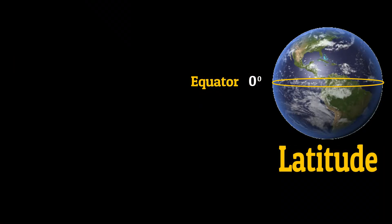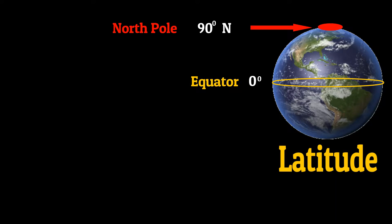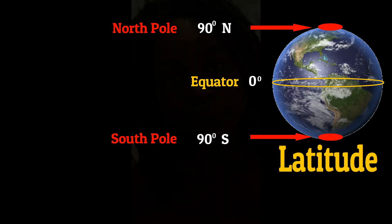Let me show you an example. This is the equator — it's at zero degrees. This is the north pole and it's at 90 degrees north. And this is the south pole and it's at 90 degrees south latitude.